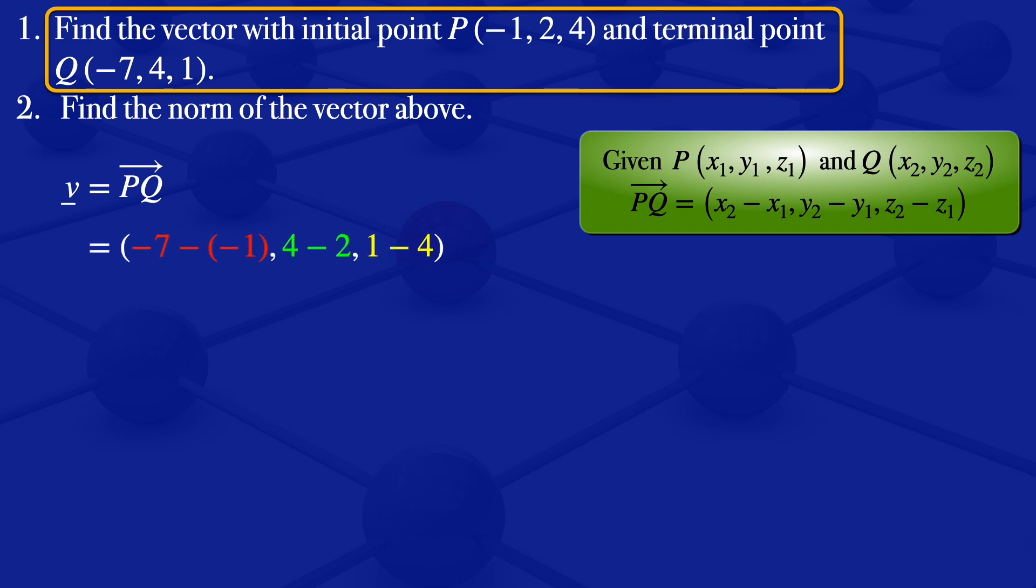Now I'll simplify these components. The first component, the one in red there, -7 minus -1 gives us -6. 4 minus 2 gives us 2. 1 minus 4 gives us -3. So the position vector we're looking for is (-6, 2, -3).